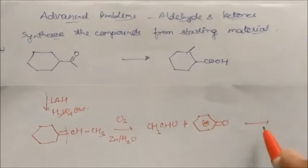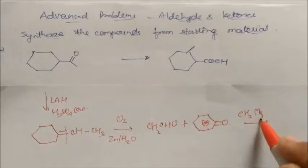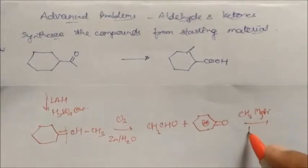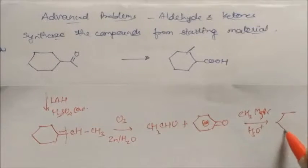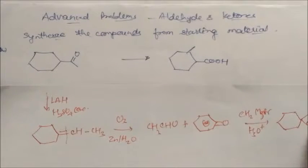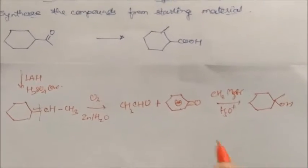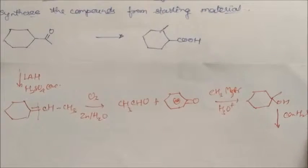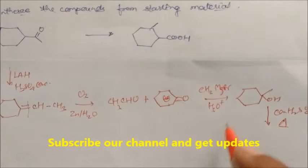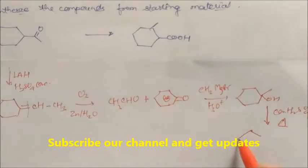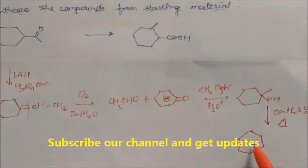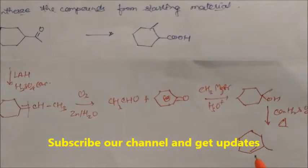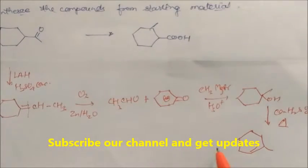Again if you use the product CS3MgBr (Grignard reagent) followed by hydrolysis, this product will convert into an alcohol (OH). Again, this reacts with concentrated H2SO4 and on heating, dehydration takes place and this will give you an alkene — it becomes a cycloalkene.